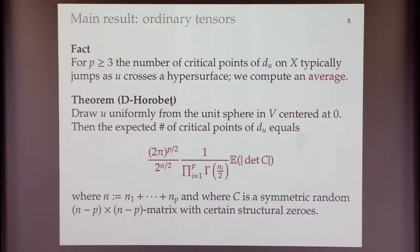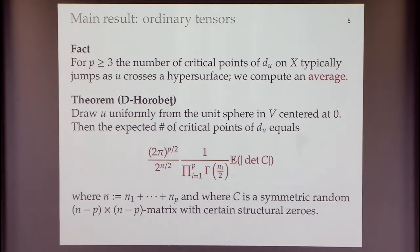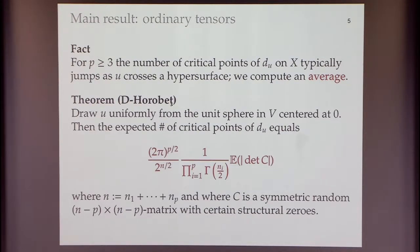For ordinary tensors, the number of critical points is typically not constant — it jumps across some hypersurface, about which I unfortunately have little to say. So the real-numbers question doesn't have a single number to compute. What we do instead is draw U from a probability distribution and compute the average number of critical points. The theorem: if you draw U uniformly from the unit sphere in V, the expected number of critical points of the distance function is a specific expression involving pi, gamma functions, and the expected absolute value of a determinant of a random matrix C.